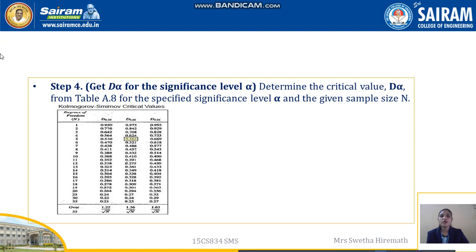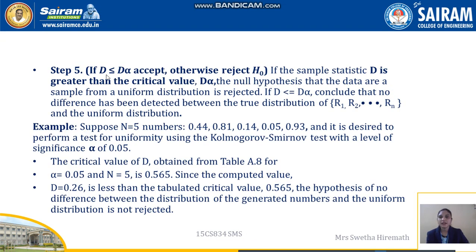In step 4, obtain the critical value D-alpha from Table 8 for the specified significance level alpha. For example, for 5 samples and alpha = 0.05, D-alpha = 0.565. This D-alpha value is then compared with the computed D value. If D is less than or equal to D-alpha, we accept the random number sample; otherwise it is rejected.